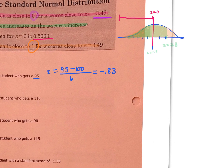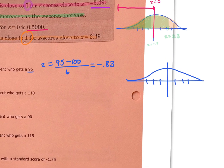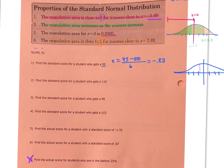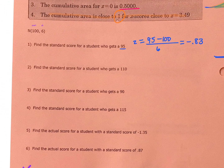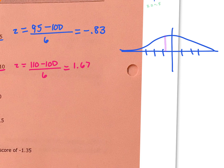Visually, that z-score of negative 0.83 means the score of 95 — which we can't use the empirical rule to figure out — lies at this particular location, about right there on the distribution. It was only asking for the z-score, not any proportion or percentage. For a student who gets 110, we do observation minus mean all over standard deviation, and we find z equals 1.67. That's positive, so it's to the right of our mean — one and two-thirds standard deviations above the mean. That's a pretty good score.